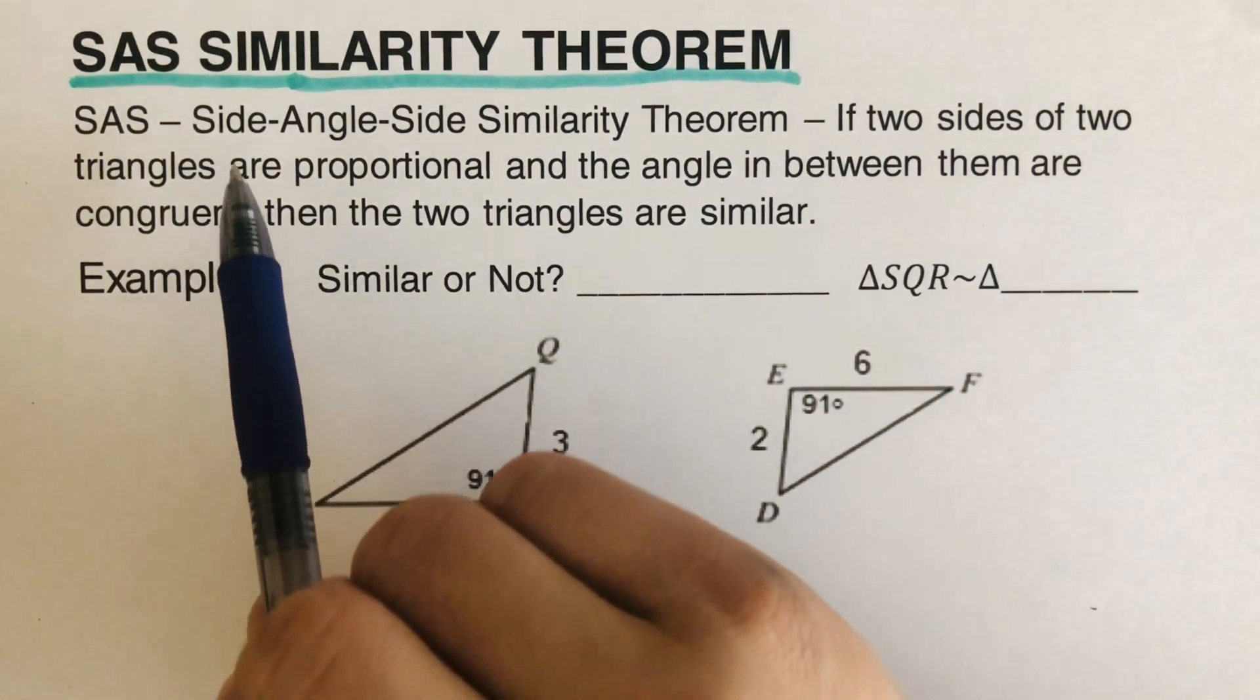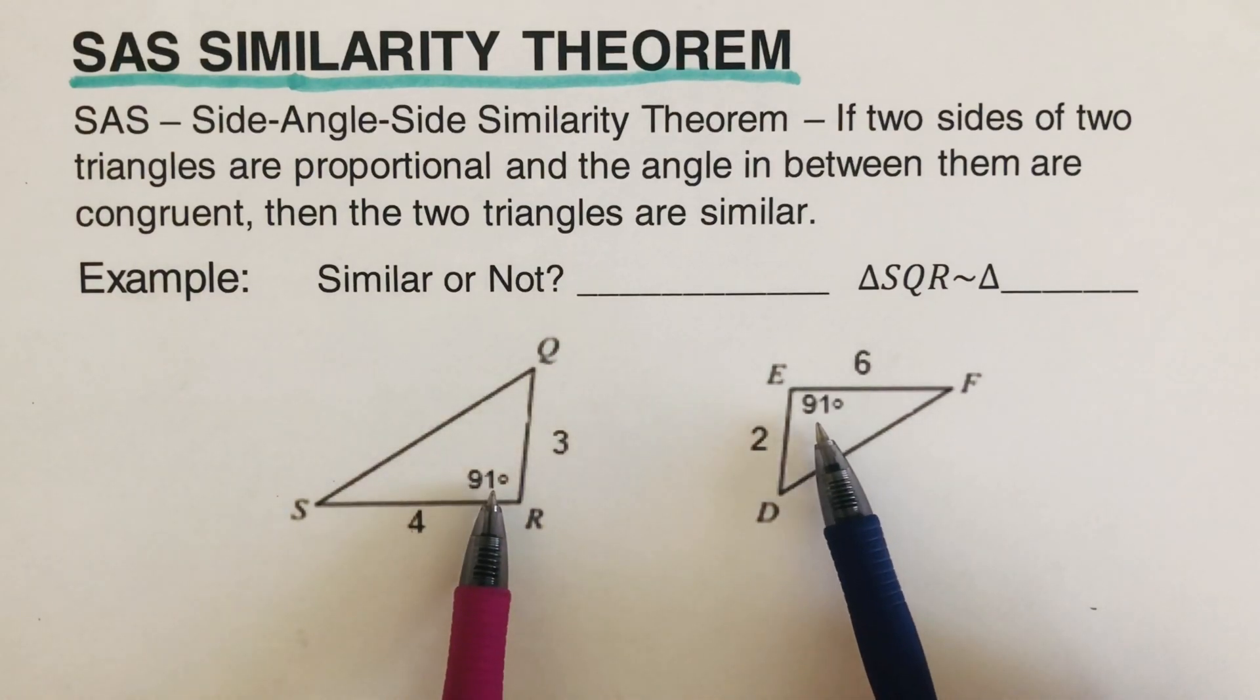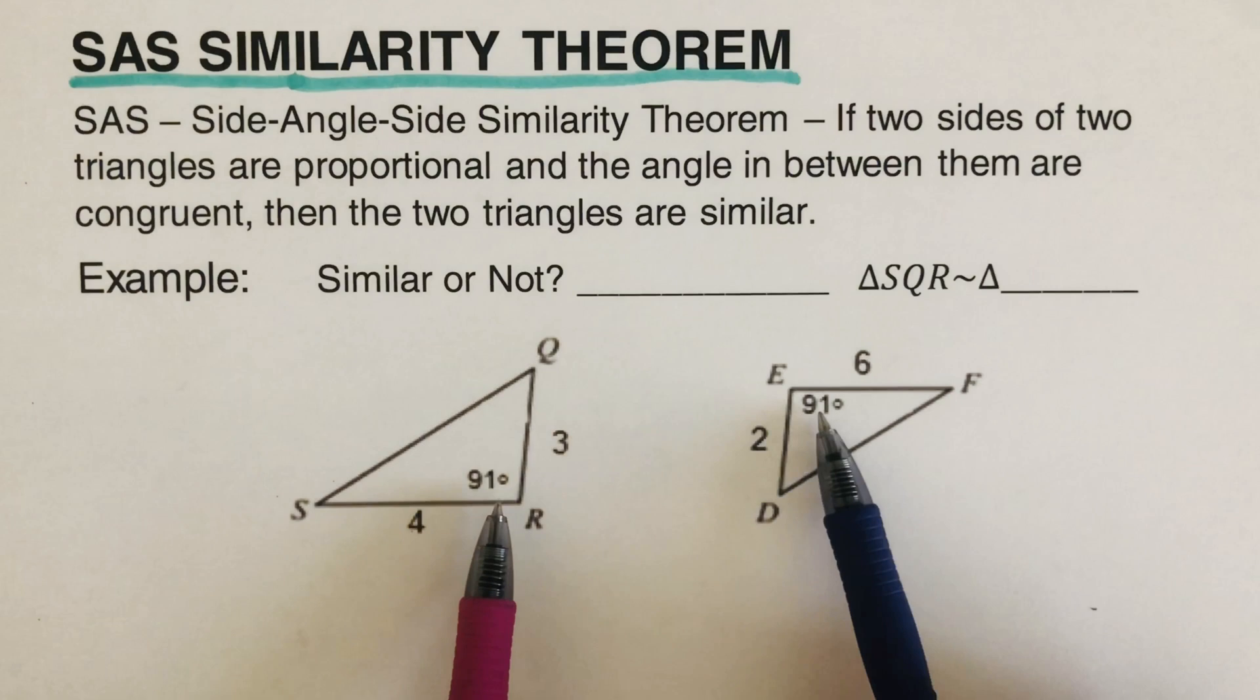SAS stands for Side Angle Side Similarity Theorem. What does this mean? If we are given two triangles, they will be similar if their angles are congruent. So the angles that are included, the included angle or the angle that's in the middle between the two sides are congruent.